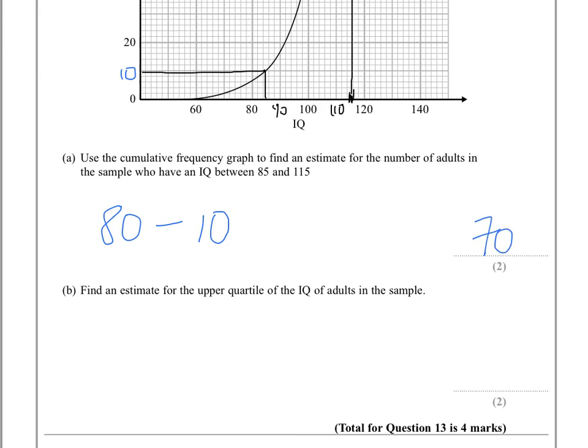The next part says find an estimate for the upper quartile. The quartiles, whether upper or lower, are normally done in 25th percentile. So the lower quartile is the 25th percentile, the upper quartile is 25th percentile from the top, which being 100, would be the 75th percentile.